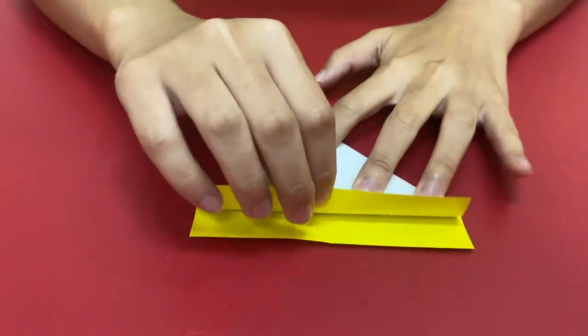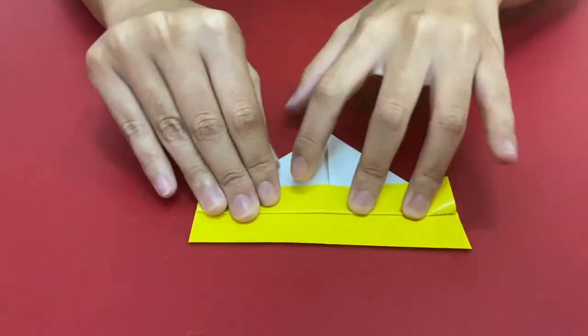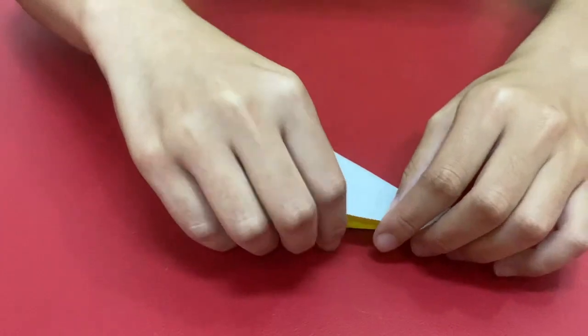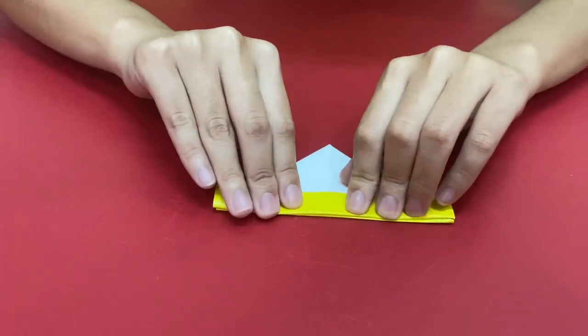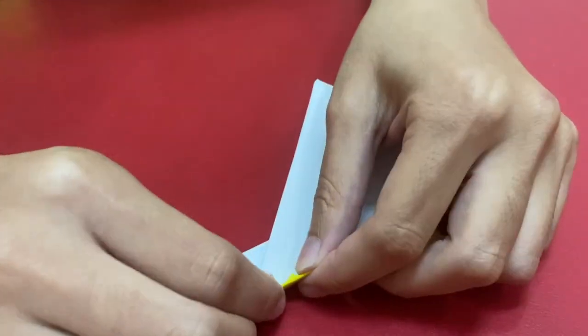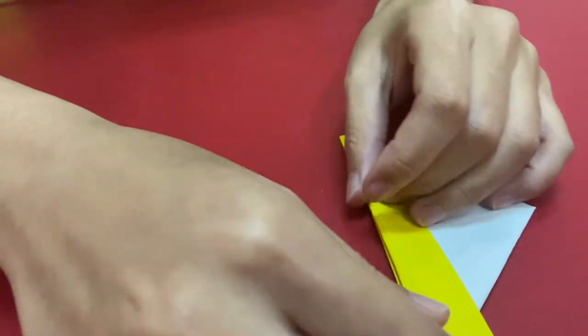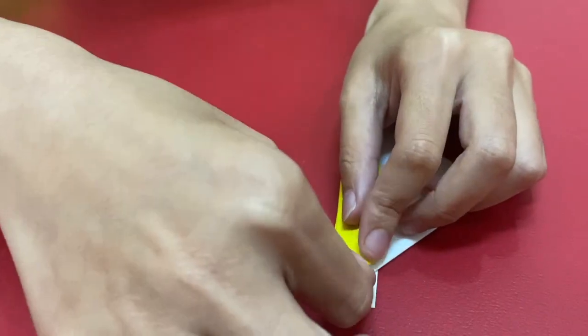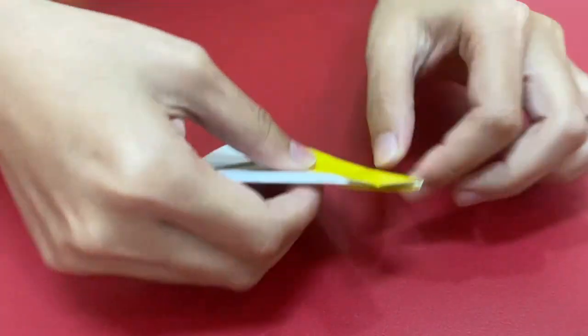Next you pull the bottom, fold it up, and you will also do it on the other side. Next you tuck in the corner, fold it inside. Do it also on the other side.